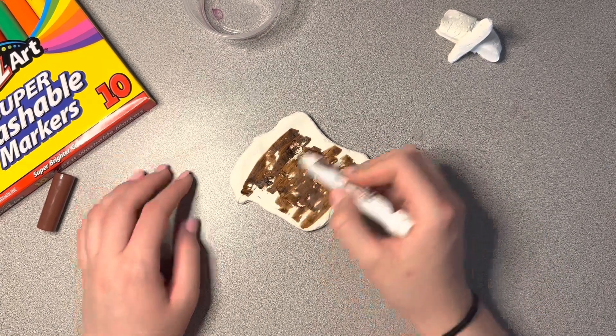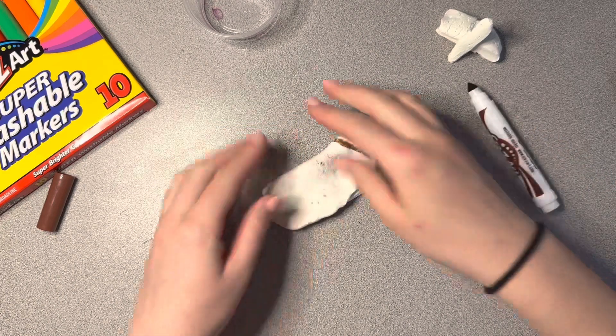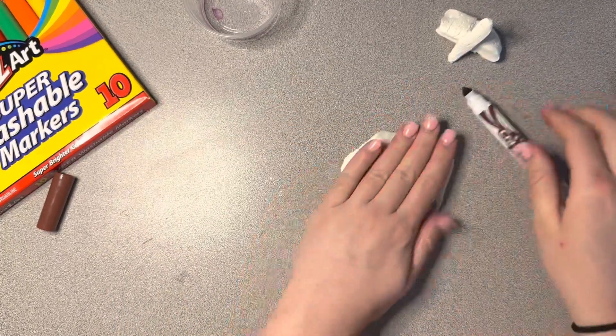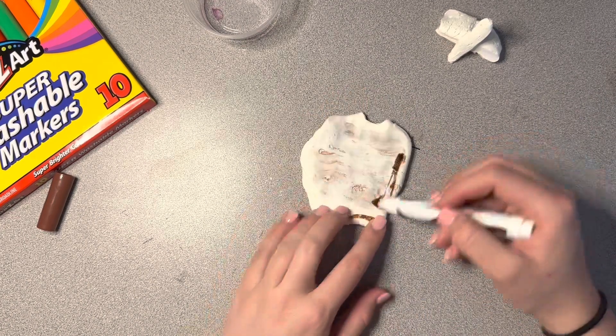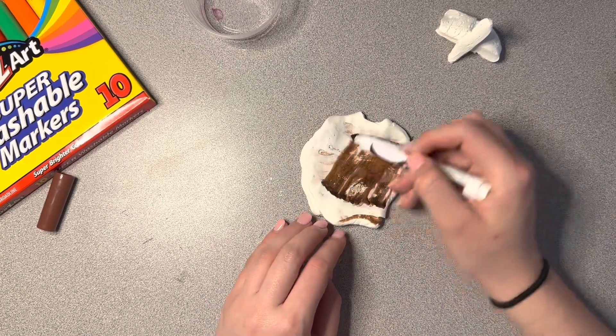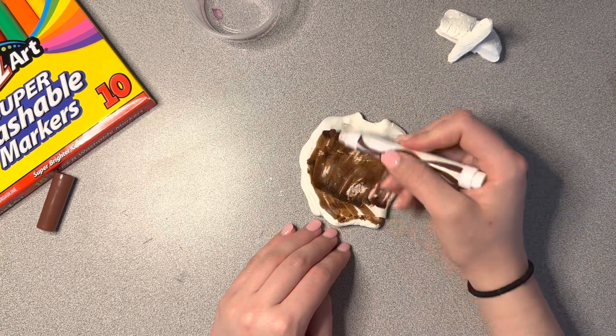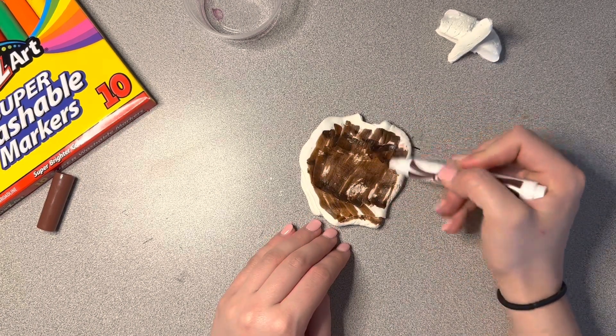So I would say fold it, if you want the tan color, I would fold it about four times. If you're wanting yours like a really dark brown, like a chocolate cookie, I would fold it about six or seven times.